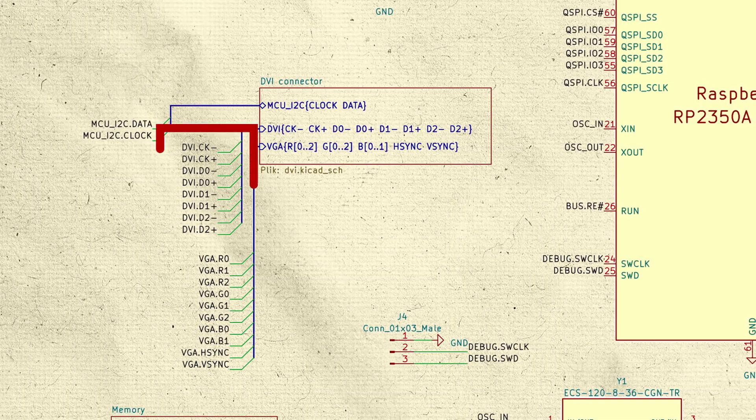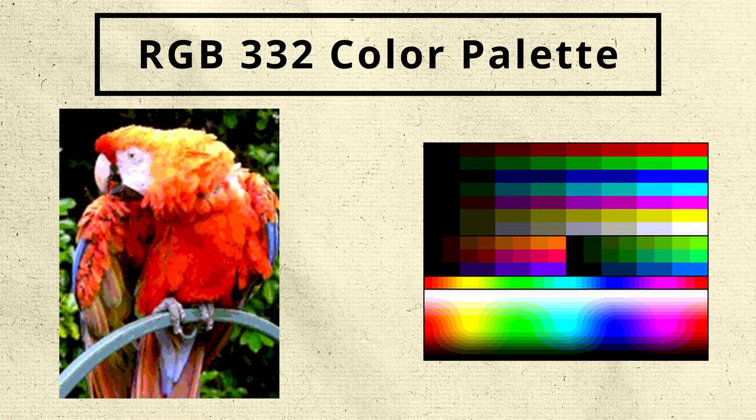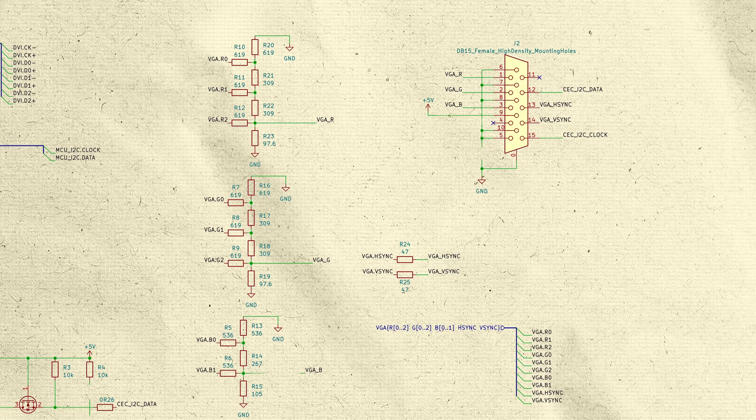I wired both the DVI output and the VGA, which uses the RGB332 signal — which is 8-bit. For VGA, I've created a Resistor Digital-to-Analog Converter.